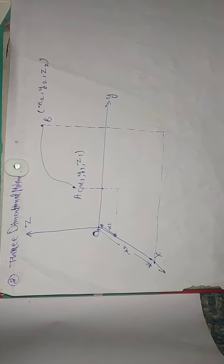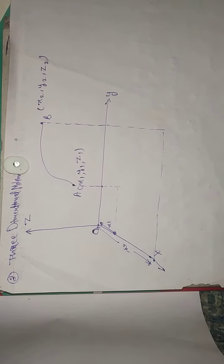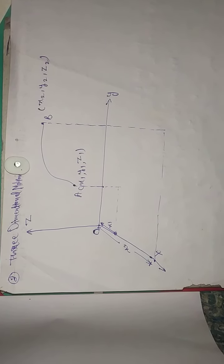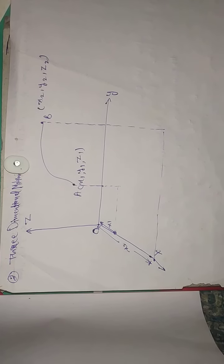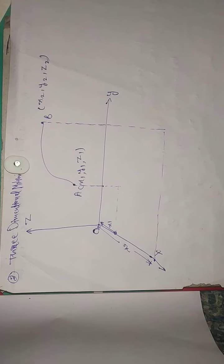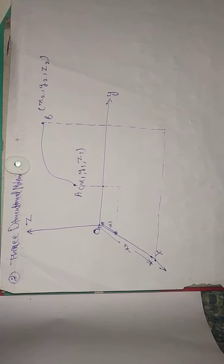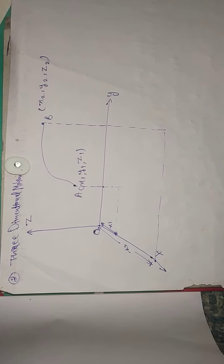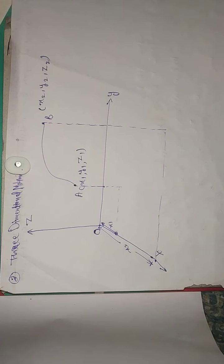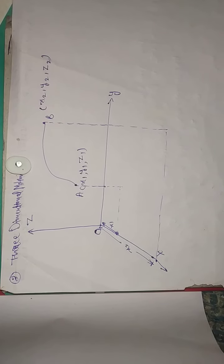We can define it as: the motion of an object is said to be three dimensional if all three coordinates specifying its position change with time. In 1D motion the object moved along a line, in 2D along a plane, but in 3D the particle moves in a space.